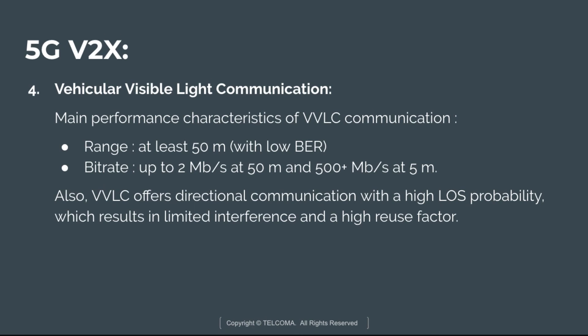The main performance characteristics of VVLC communication: its range is at least 50 meters with a low bit error rate, its bit rate is up to 2 Mbps at 50 meters and 500+ Mbps at 5 meters. VVLC offers directional communication with a high line-of-sight probability, resulting in limited interference and a high reuse factor. These are the various components used in 5G V2X architecture design.